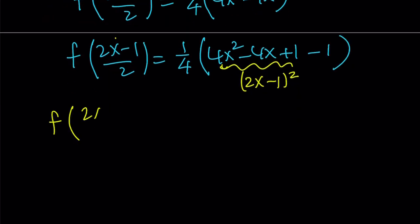So we get f of 2x minus 1 over 2 equals 2x minus 1 quantity squared minus 1 divided by 4. Remember, we have an extra 1 here, which we have to subtract. And of course, the whole thing needs to be divided by 4.